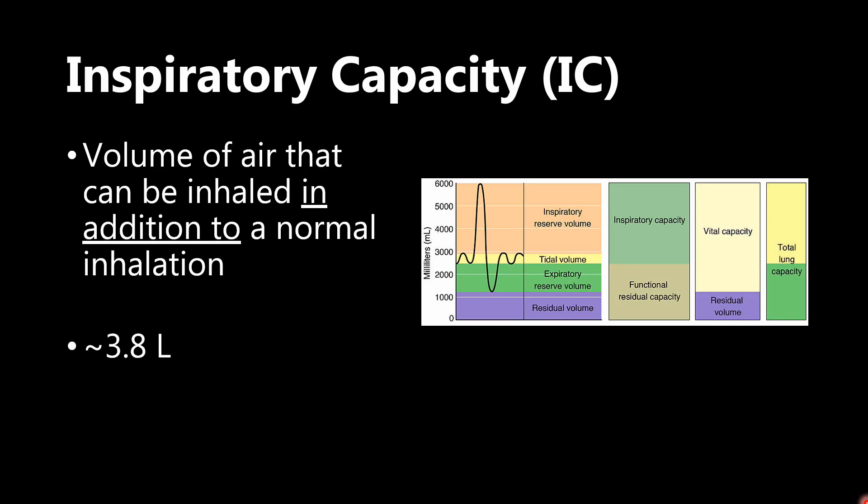The next one here, inspiratory capacity. Remember, now that we have two volumes that are being added together, we're going to get a capacity. So we have inspiratory capacity over here. This is the volume of air that can be inhaled in addition to a normal inhalation. And it's about 3.8 liters. So going back here is tidal volume plus inspiratory reserve volume. That's our entire inspiratory capacity.